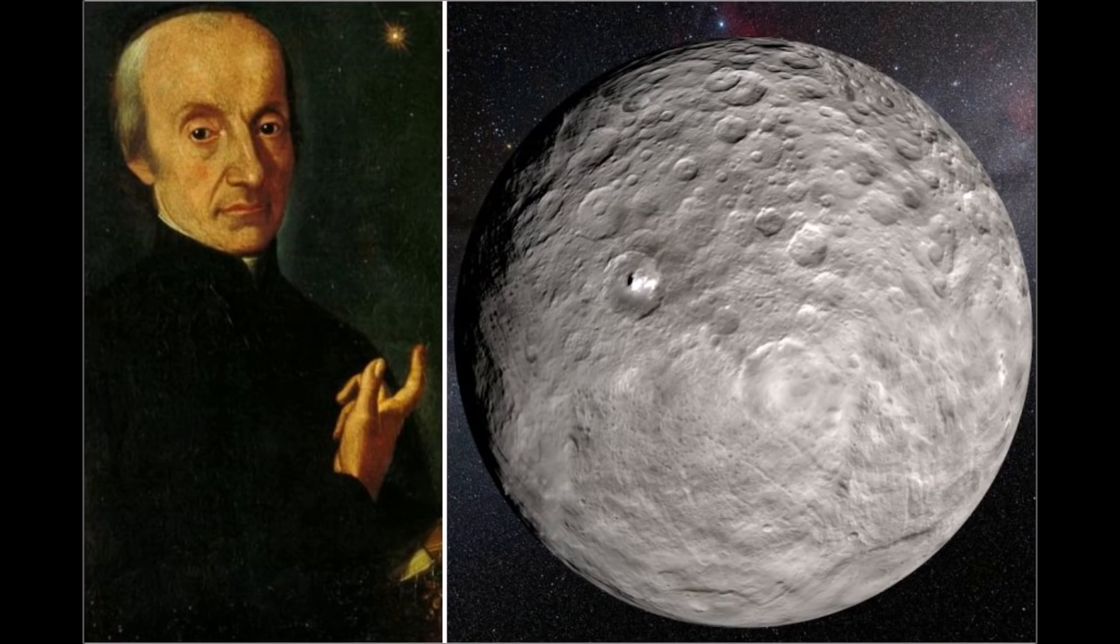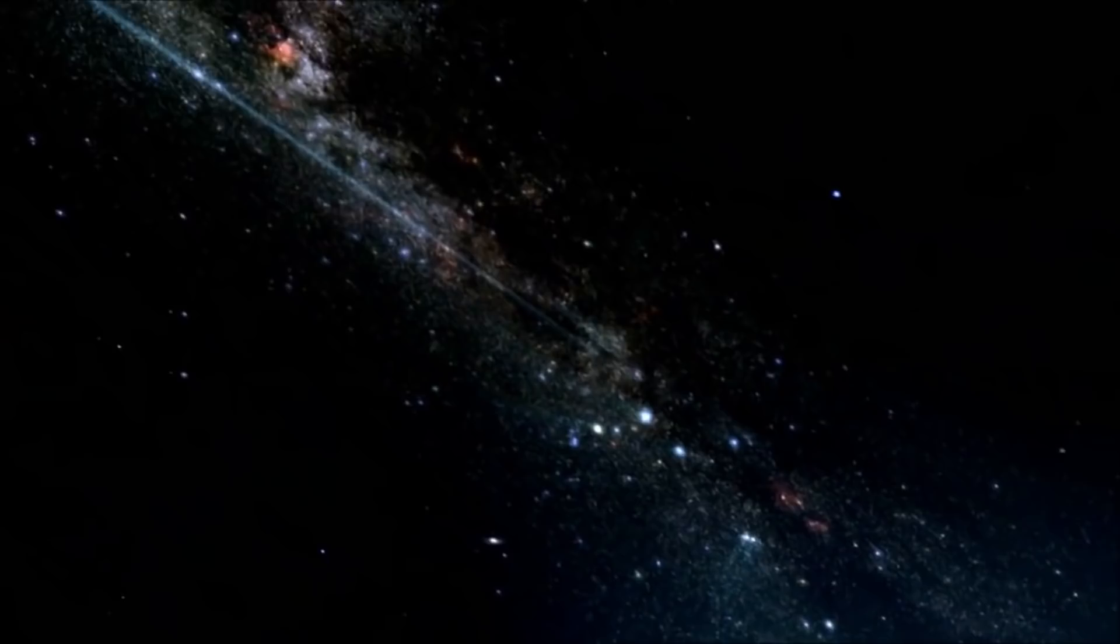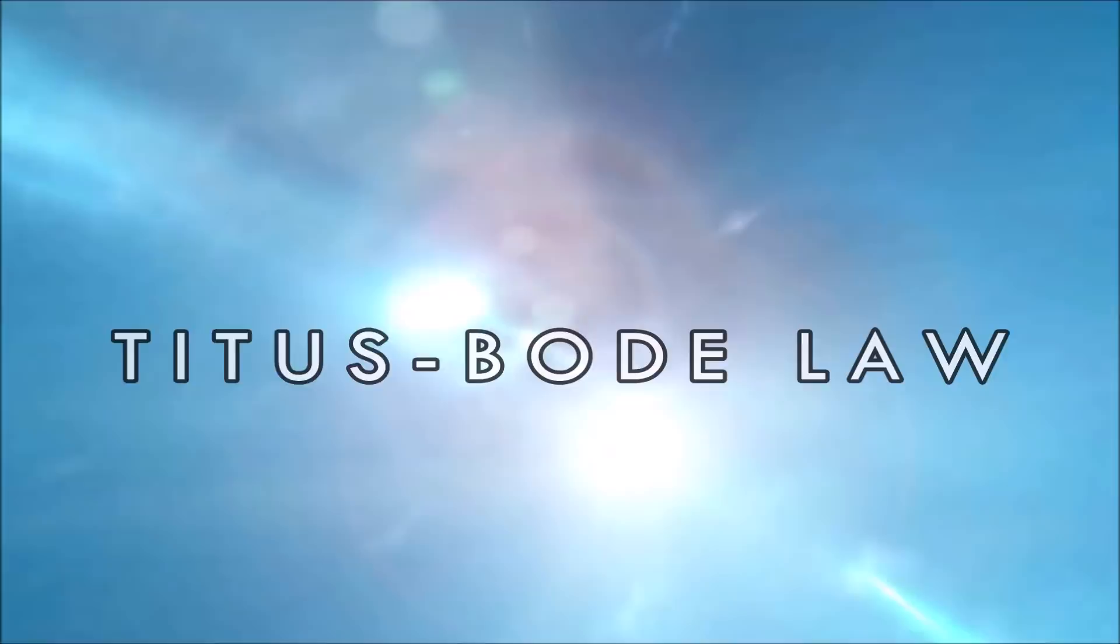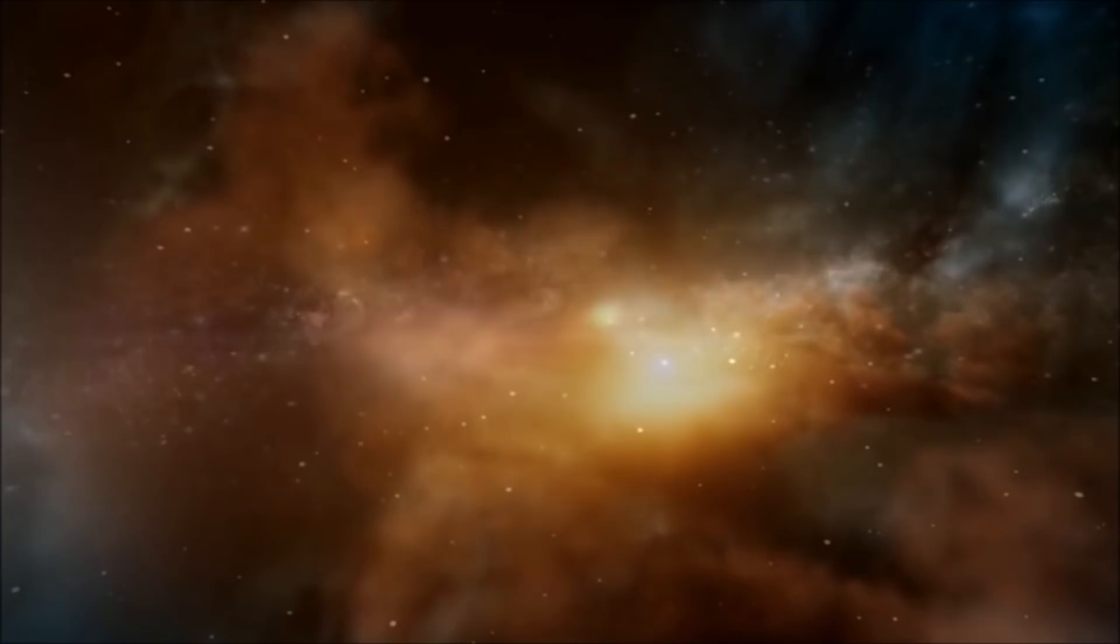The law stated that each planet moving further away from the Sun would have to orbit at twice the distance of the previous one, meaning the various planetary orbits in the solar system were increasing in radius exponentially.